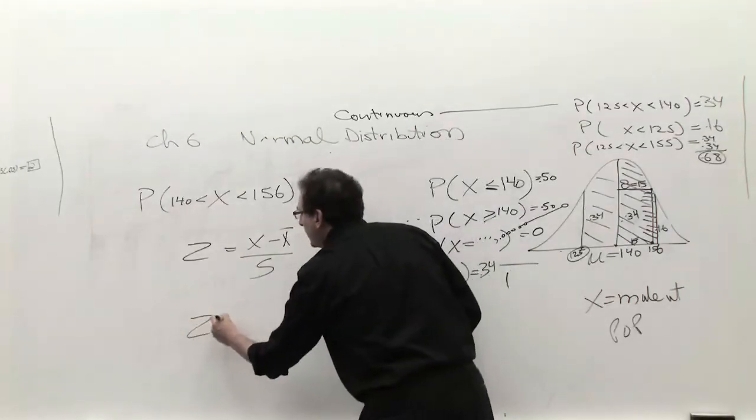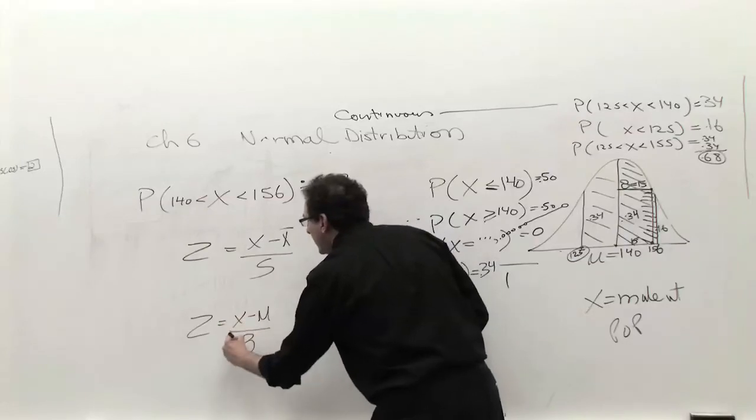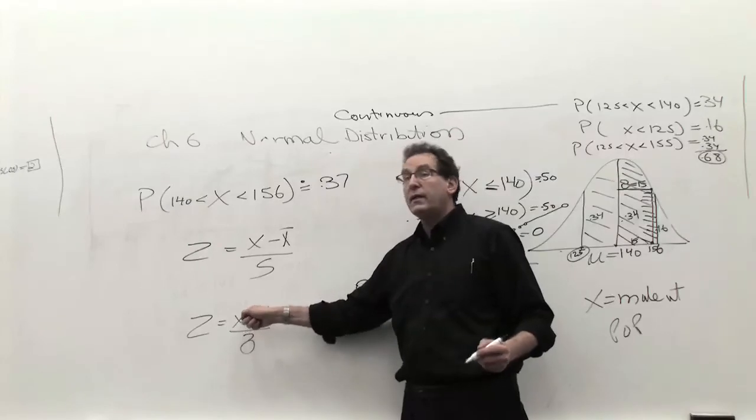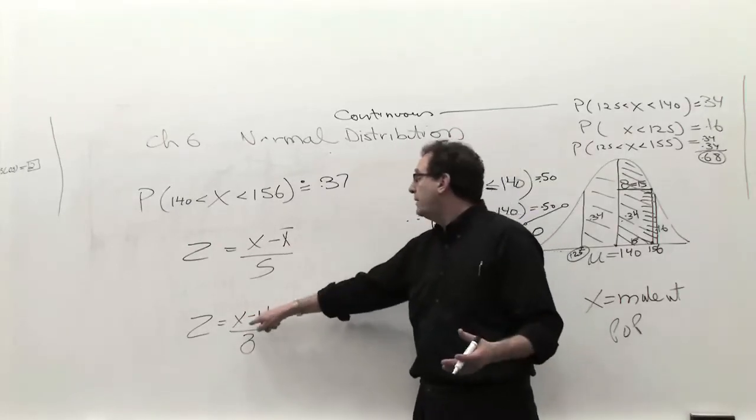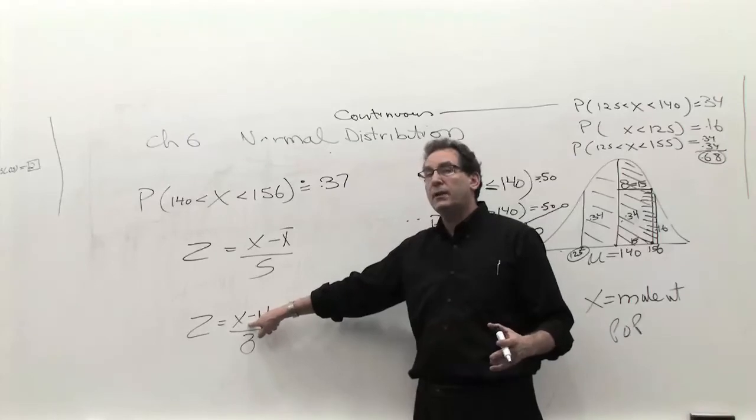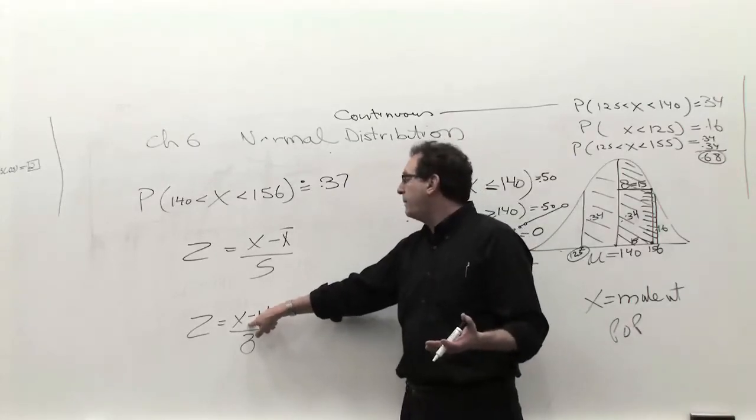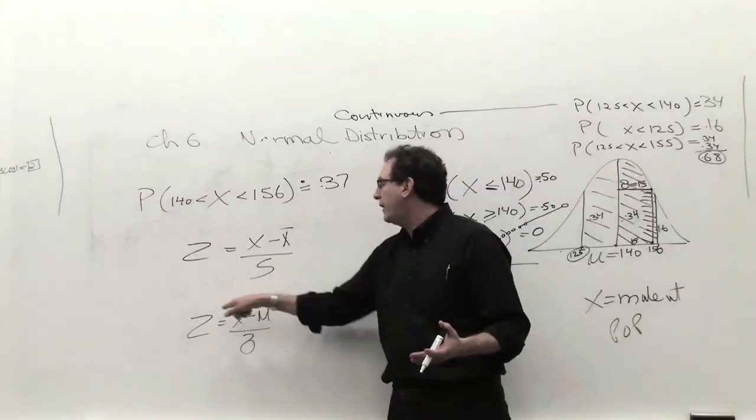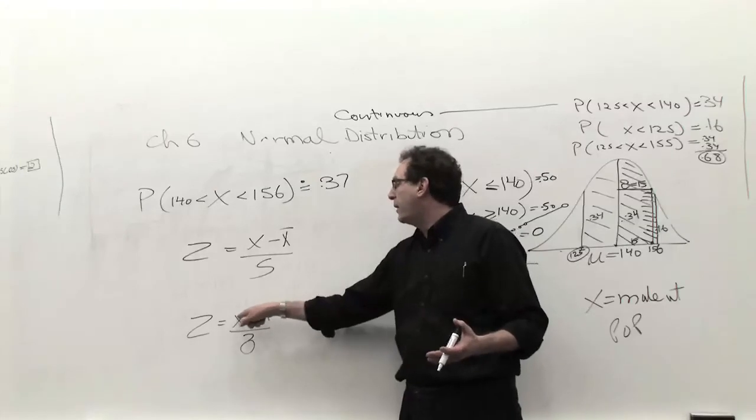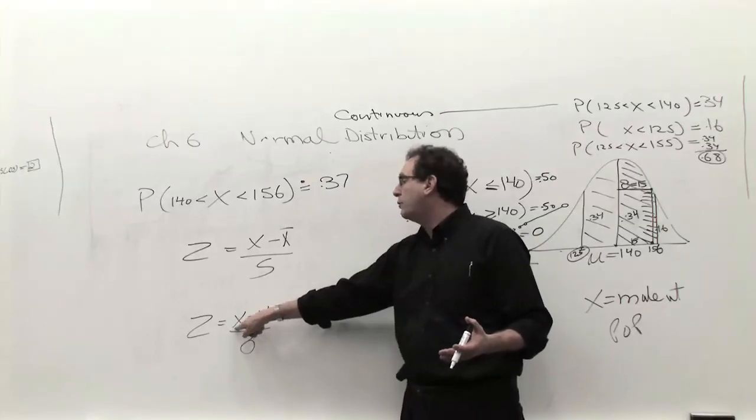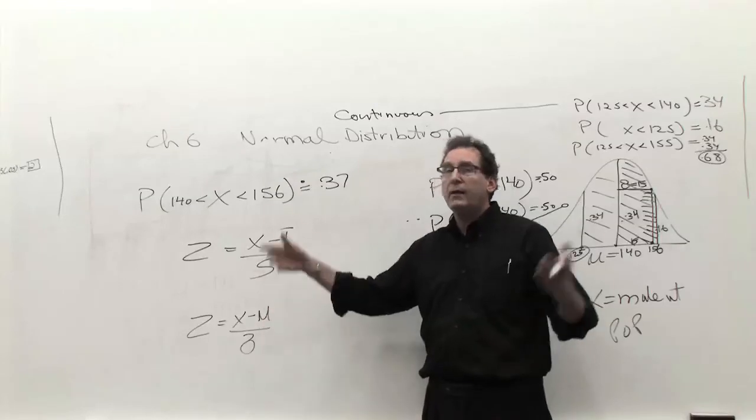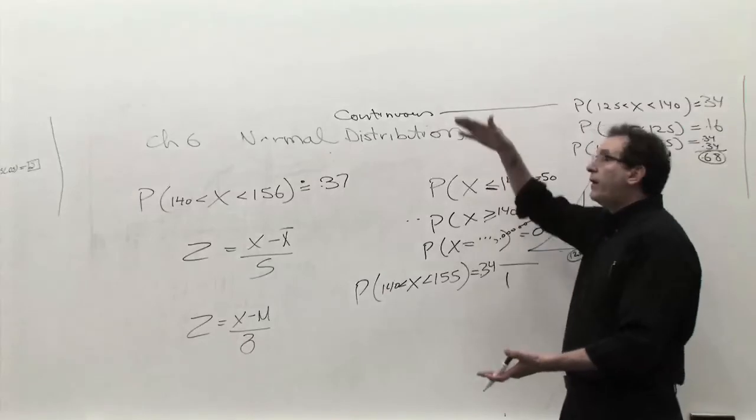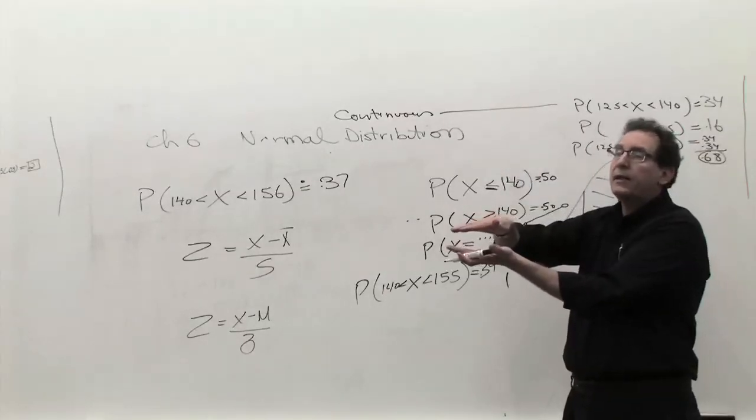In this case, we're going to use the formula X minus mu over sigma, because we're not talking about the sample, we're talking about the whole population. This formula is the only formula you need to know in chapter 6, which is why it's not a big deal. And this formula basically converts your X to a new set of data that has an average of 0, because if the original average is 140 and you subtract 140 from everybody, the new average will be 0. And if you divide everybody by sigma, the old sigma is 15, divide everybody by 15, so now the new data has a standard deviation of 1.